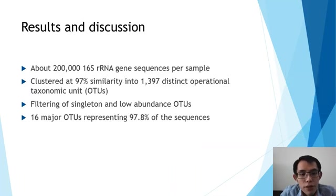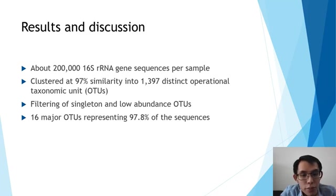As a result, about 200,000 16S rRNA gene sequences were obtained per sample. When these sequences were clustered at 97% similarity, they were grouped into 1,397 distinctive OTUs. When these OTUs were filtered for singletons and those that are low in abundance, it resulted in 16 major OTUs that represented 97.8% of the sequences.